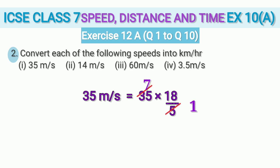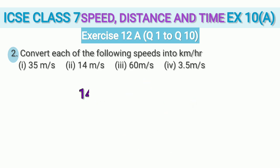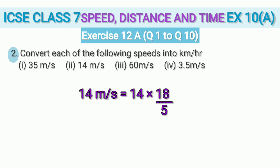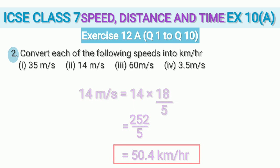In the second sub-question, convert 14 m/s to km/h by multiplying by 18/5. Nothing cancels here, so we multiply 14 × 18 = 252, then 252 ÷ 5 = 50.4 km/h. So 14 m/s is 50.4 km/h.